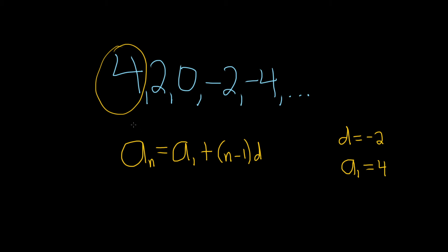Now we just have to plug everything into our formula. So a sub n is equal to a sub 1 is 4, plus, and then we have parentheses n minus 1, and we said our d was negative 2. That's our common difference.